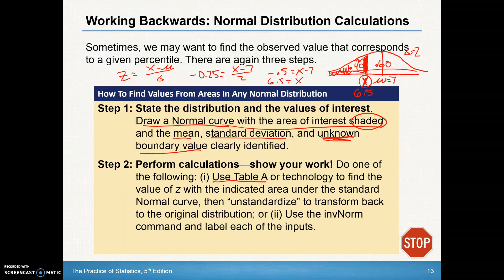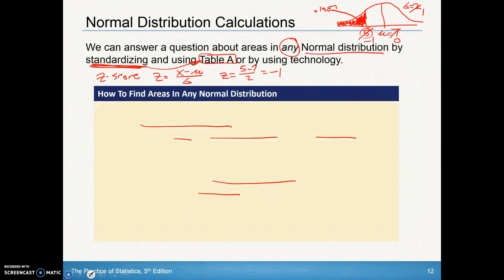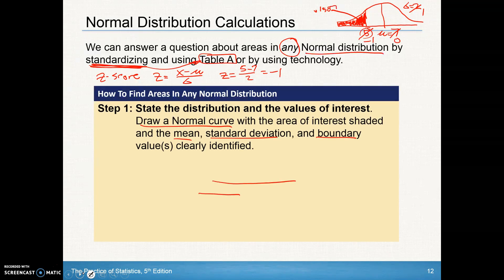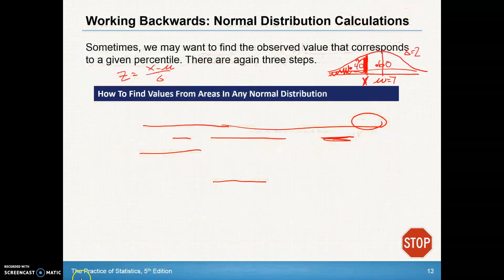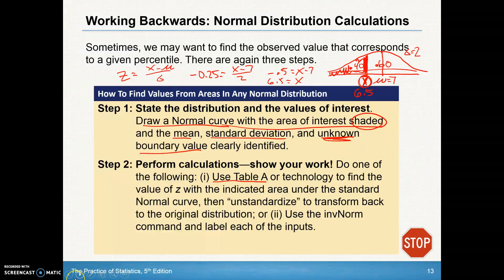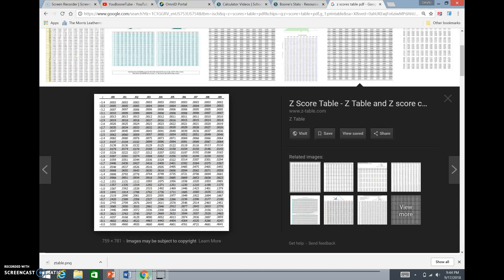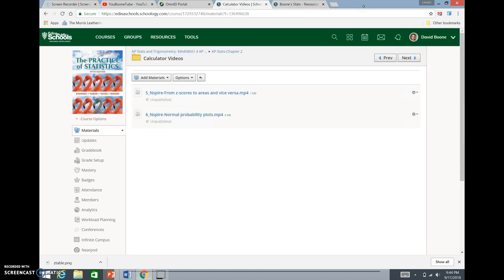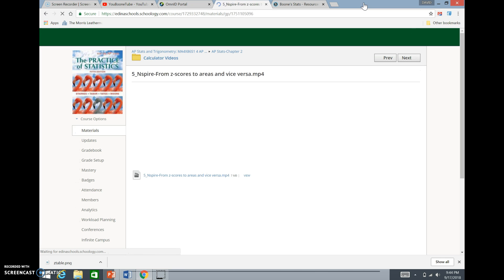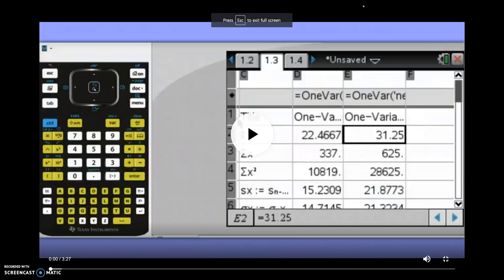That's how we use Table A to find scores on the outside given areas on the inside. Now I'm going to show the video demonstrating the technology for finding areas underneath a normal curve, and then another video showing how to work backwards — if you have an area on the inside, how to find the value on the outside. We have that in Schoology and you can play it yourself. It is the first video, number 5 in the calculator videos.